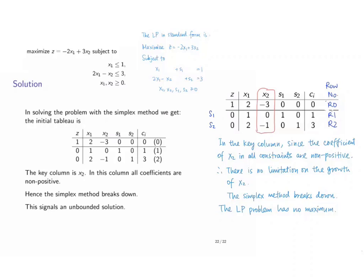In the second row, the coefficient of x2 is negative. If we refer to the second inequality, we can see that since x2 is non-negative, we can increase x2 to whatever value we like and constraint 2 will still be valid.